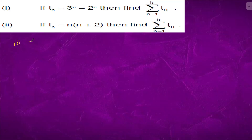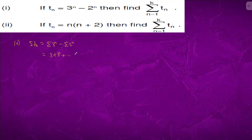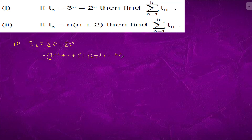We have tₙ. Summation of tₙ is equal to summation of 3 to the power n minus summation of 2 to the power n. So t1 will be 3, t2 will be 3 squared, and tₙ will be 3 to the power n, minus 2 plus 2 squared plus dot dot dot 2 to the power n.